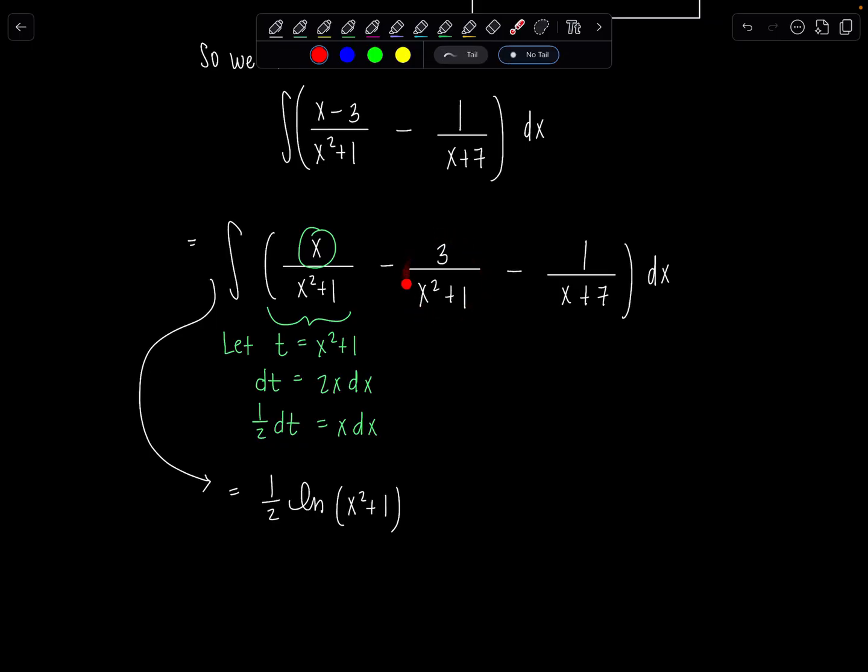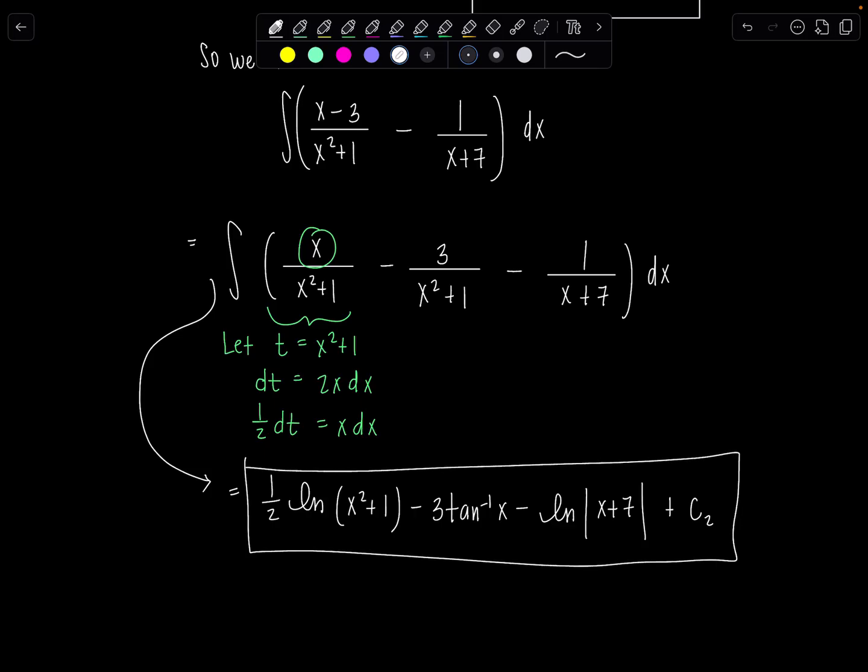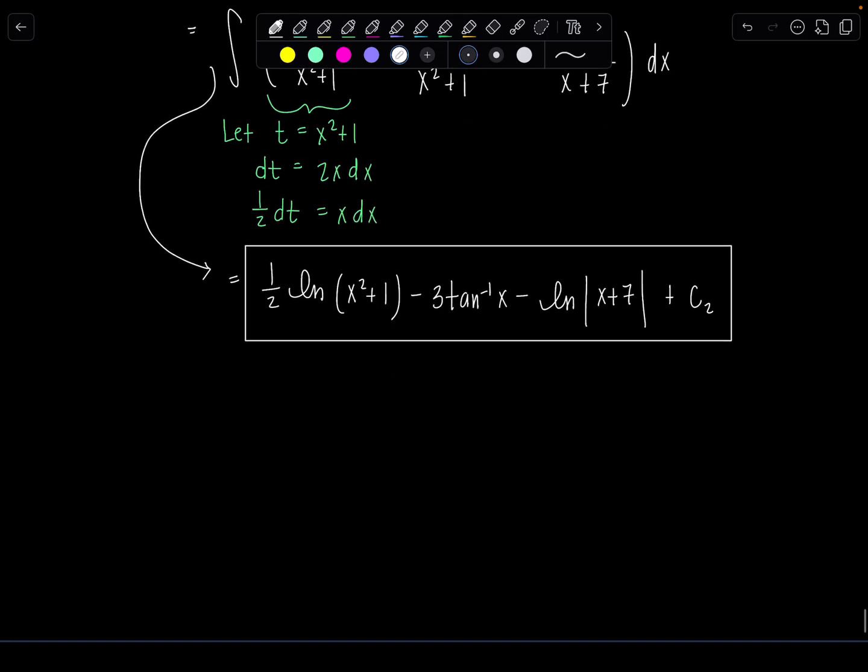x squared plus 1. That's what t would have been. But then if you think about it, this is never negative. So these can just be parentheses. They don't need to stay absolute value bars. Just always be aware. Don't be sloppy. And then here we go.